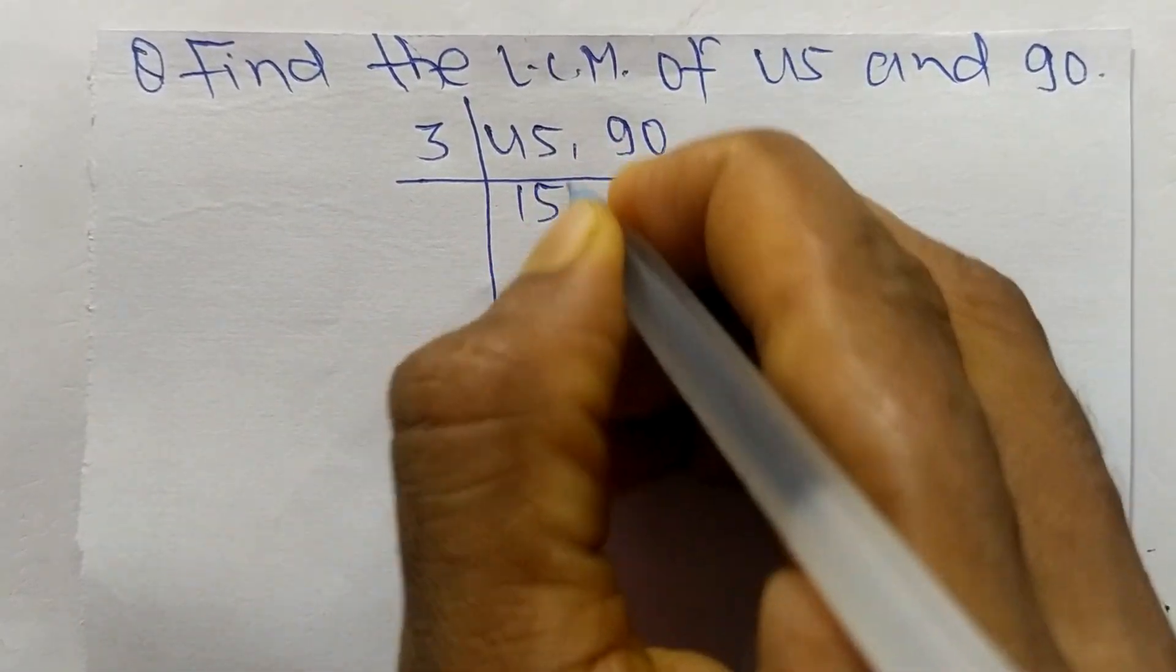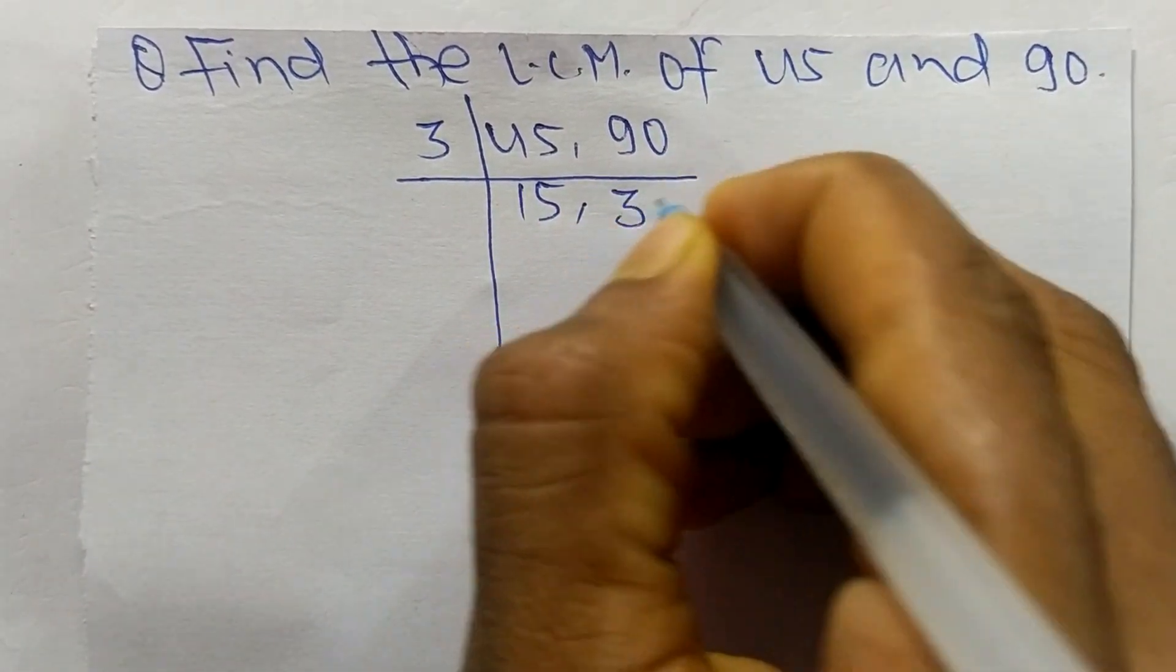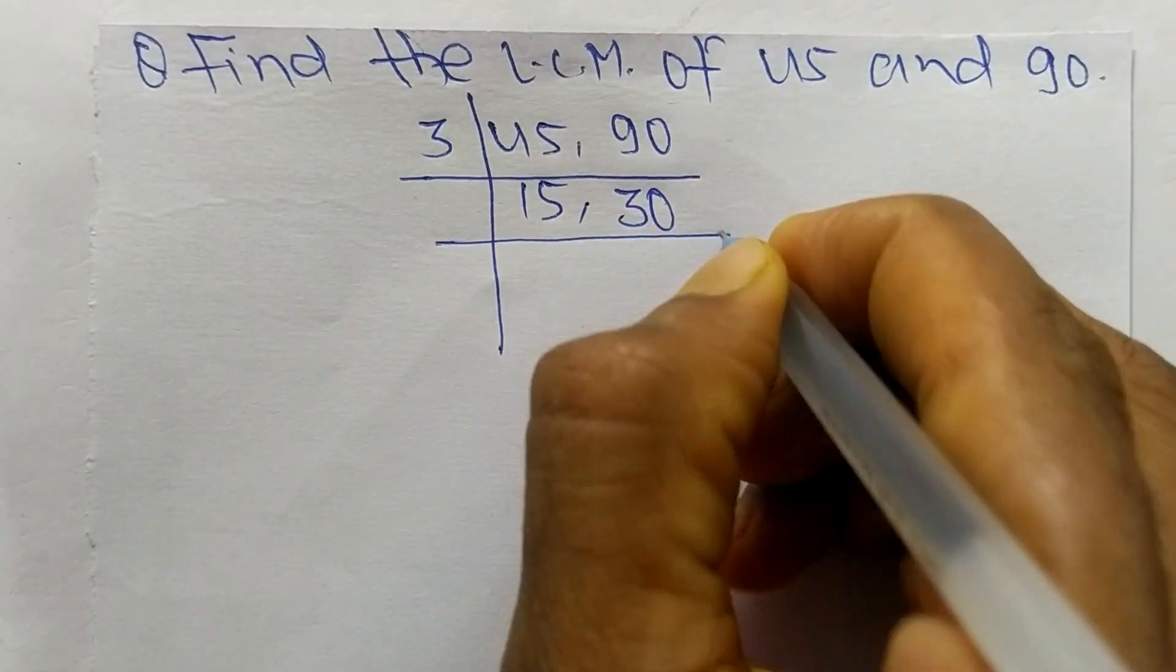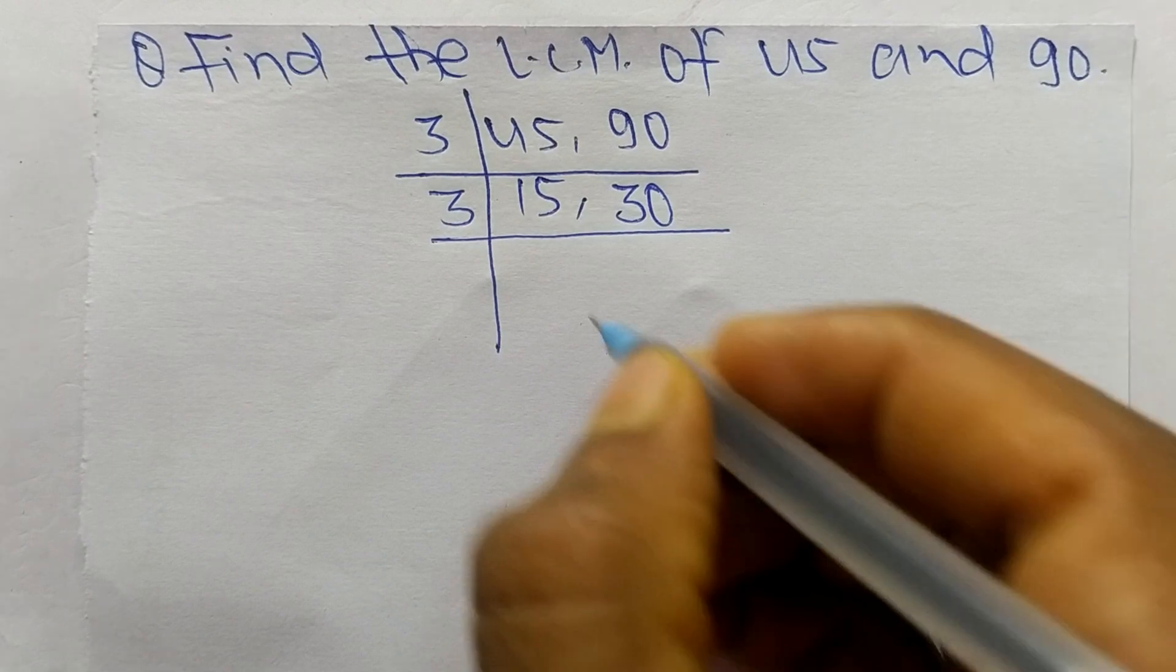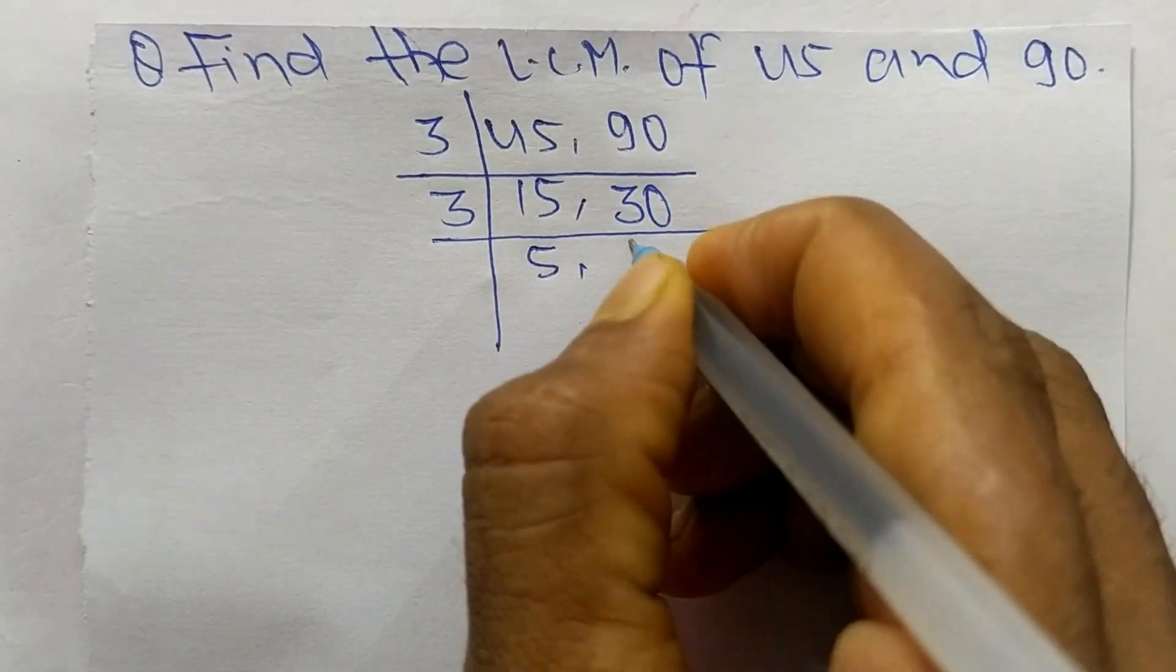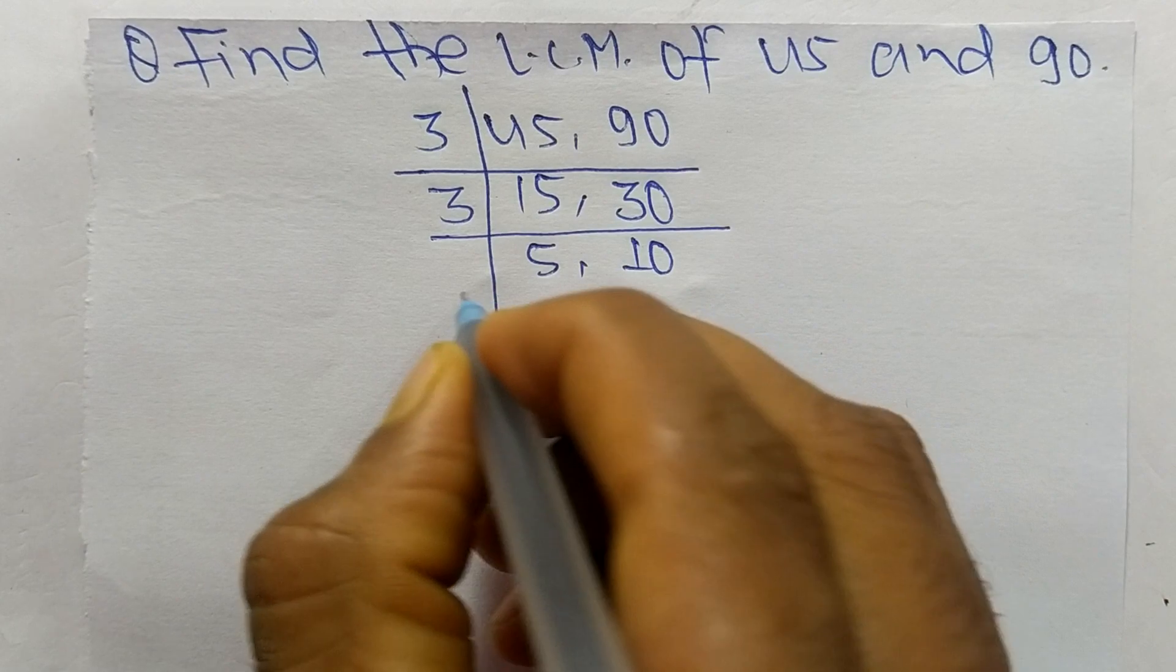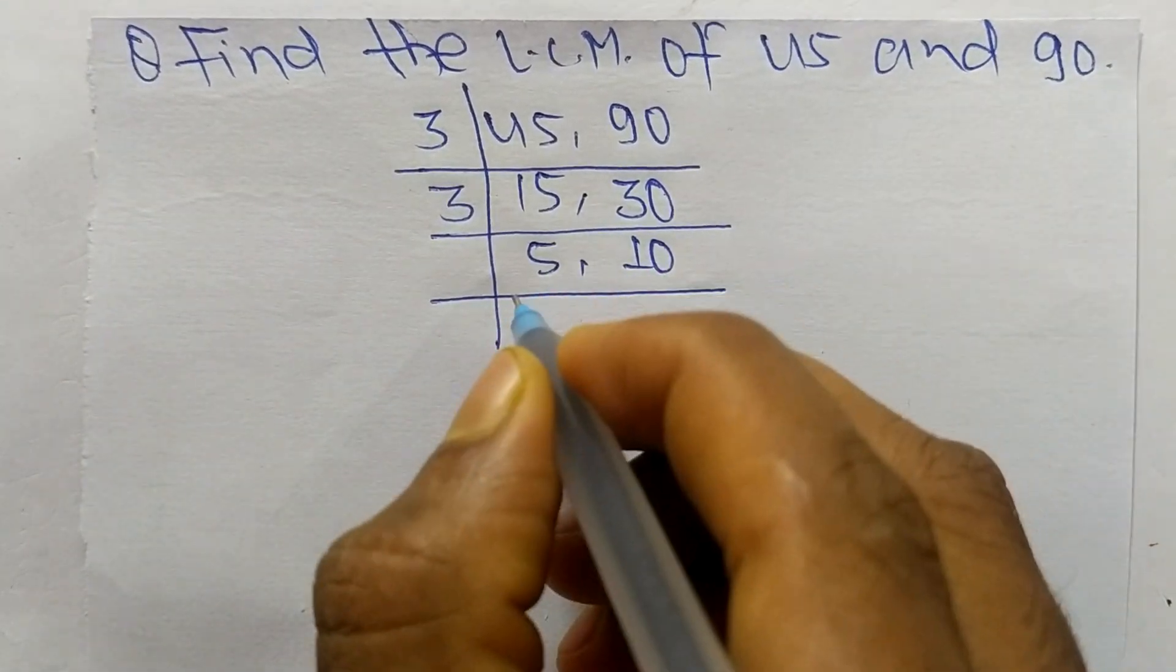3 times 15 equals 45, and 3 times 30 equals 90. Again, these both are divisible by 3. So 3 times 5 equals 15, and 3 times 10 equals 30.